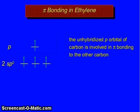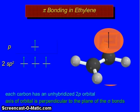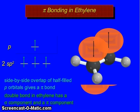The unhybridized p-orbital of carbon is involved in pi bonding to the other carbon. Each carbon has an unhybridized p-orbital. Axis of the orbital is perpendicular to the plane of the sigma bonds. The side-by-side overlap of half-filled p-orbitals gives a pi bond. The double bond in ethylene has a sigma component and a pi component.